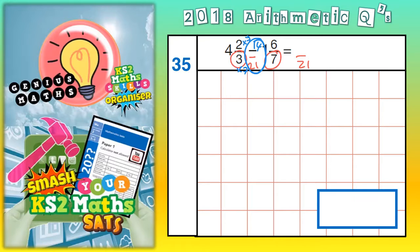2 thirds is the same as 14 21ths. I'm just going to scribble out the 2 thirds. So from now on we'll see it as 4 and 14 21ths. So 4 and 14 21ths is the same as 4 and 2 thirds.